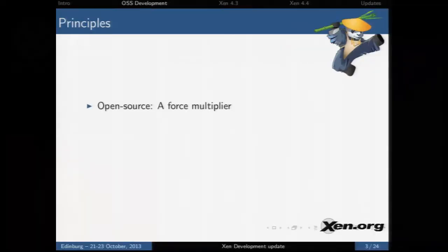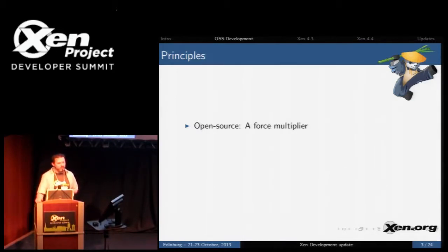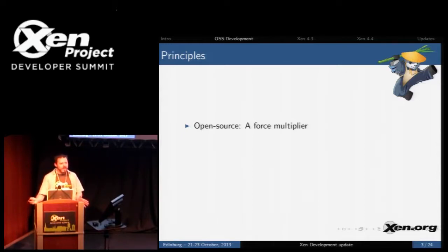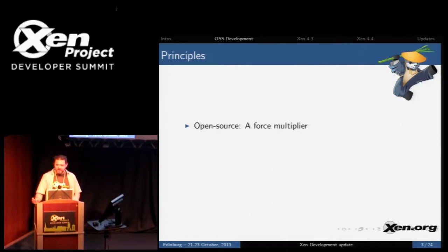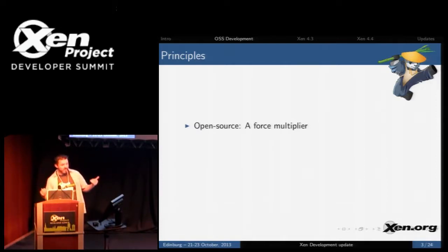One of the things that's economically great about open source from a business perspective, apart from the fun of working with cool developers, is that it's a force multiplier. All the companies that use Xen could separately hire people to implement their own hypervisors, but that would be wasteful. Citrix is one of the largest contributors to Xen.org, contributing maybe about a third of the total code, meaning Citrix hires N people but gets 3N developer effort out of contributing to the open source project.